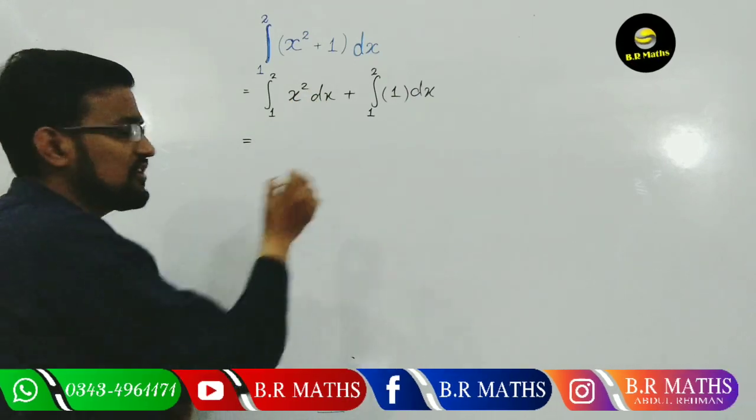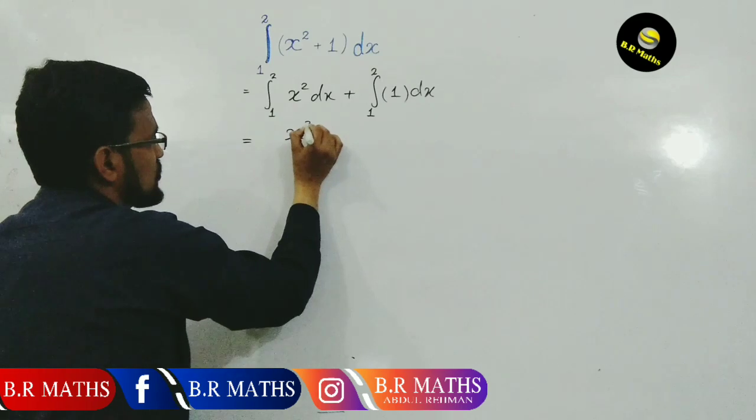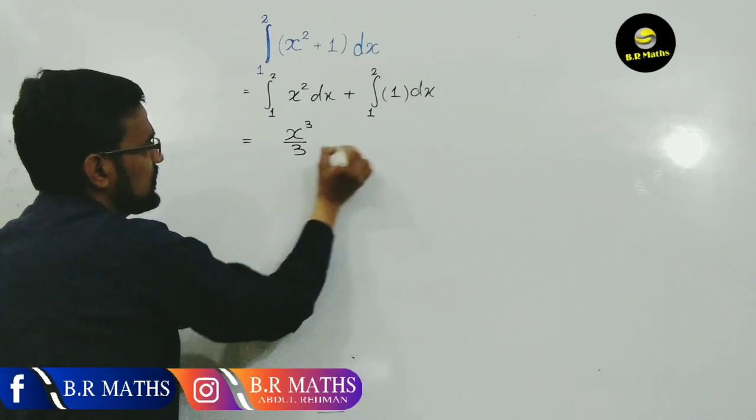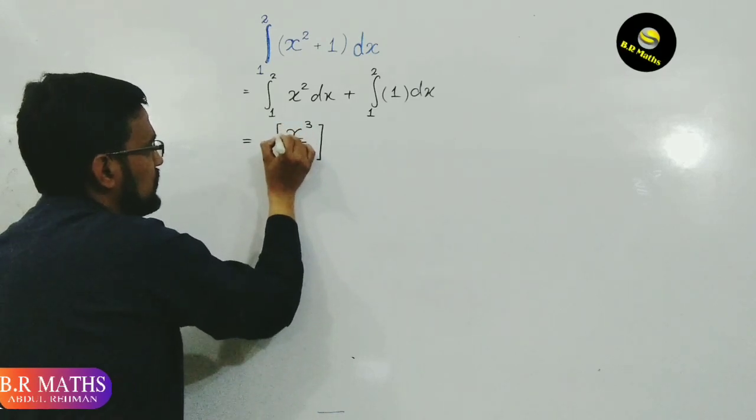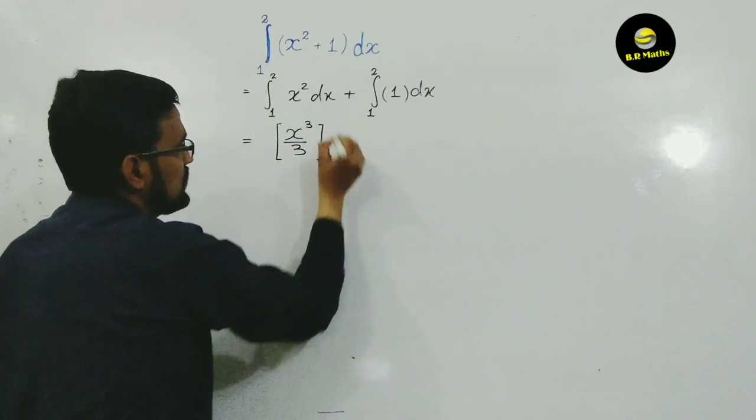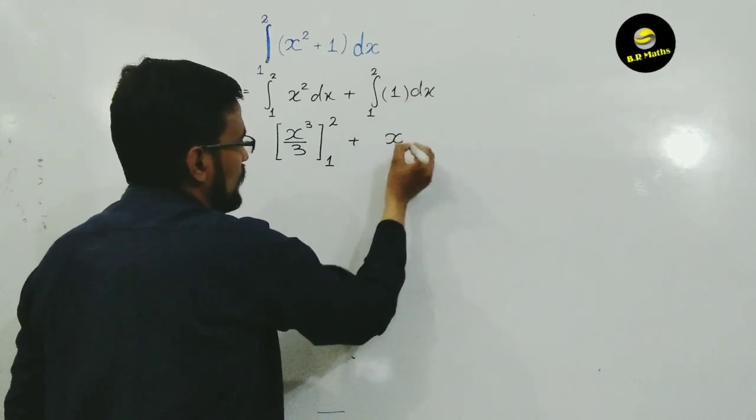x square - so integration of x square is x cube divided by 3, and the limit is 1 to 2. Next, integration of 1 is x, and this limit 1 to 2.